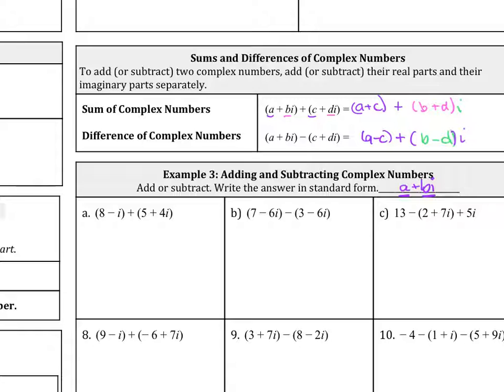So we're going to add 8 minus i plus 5 plus 4i. And so the 5, we're going to add the 5 to here. So I'm just going to write it vertically and then plus 4i. So let's just add it. 8 plus 5 is 13 and then negative i plus 4i, that is a positive 3i.